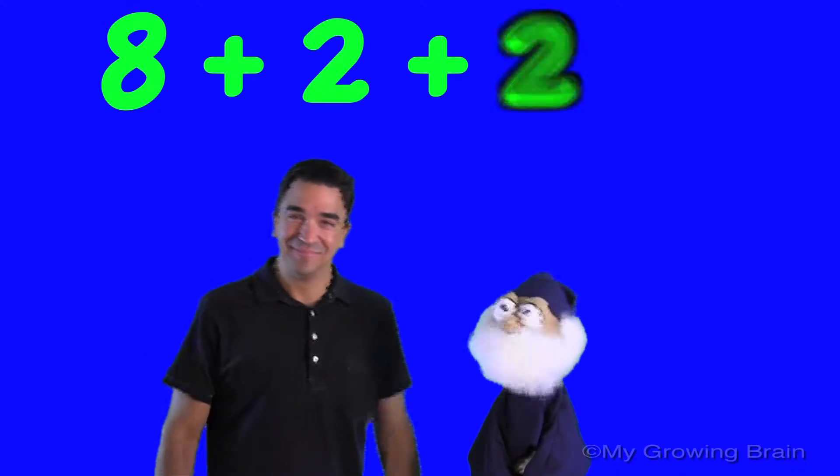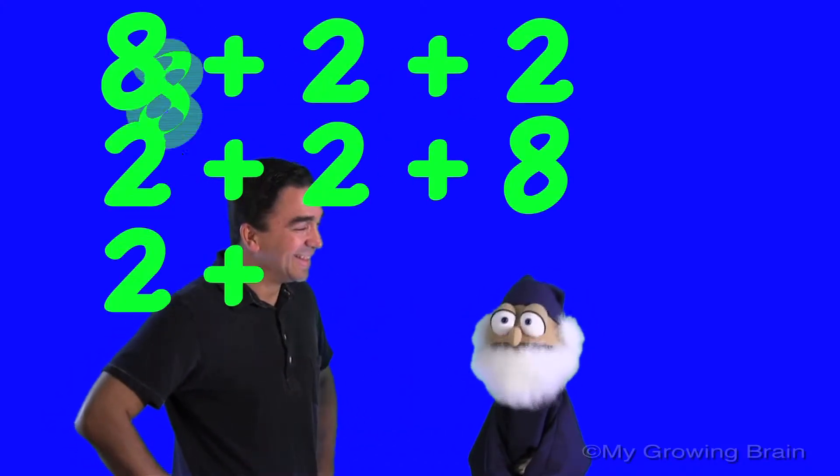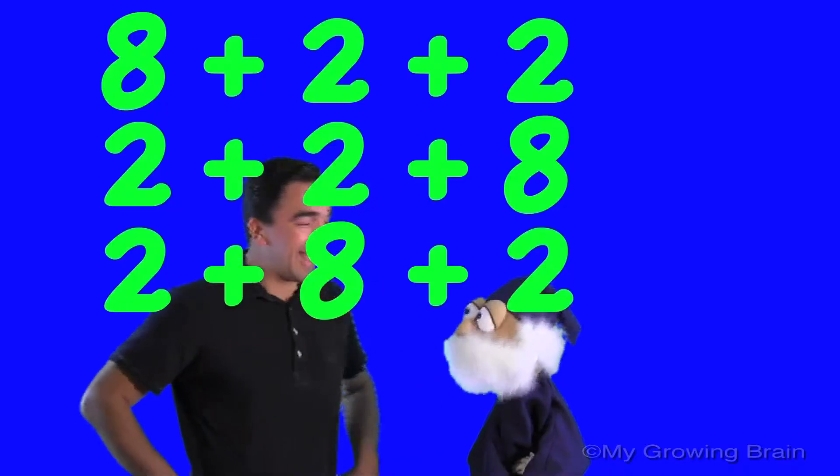Like 8 plus 2 plus 2, or 2 plus 2 plus 8, or 2 plus 8 plus 2. That's right, Duncan.